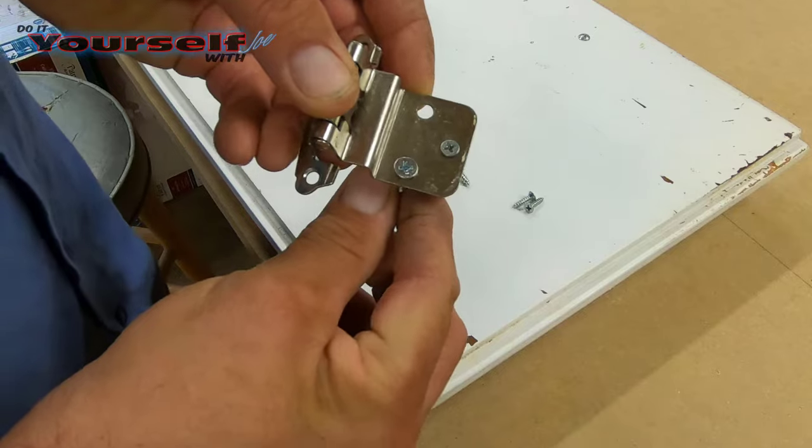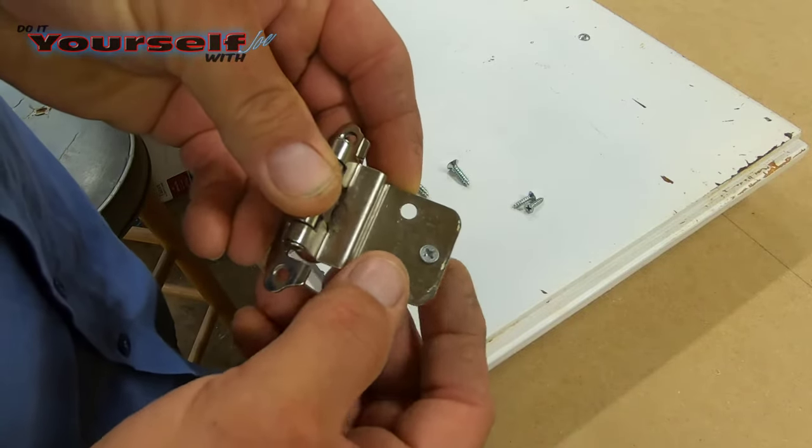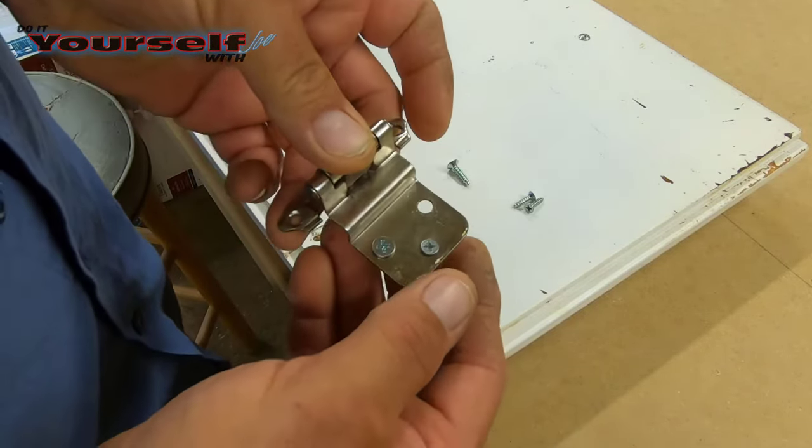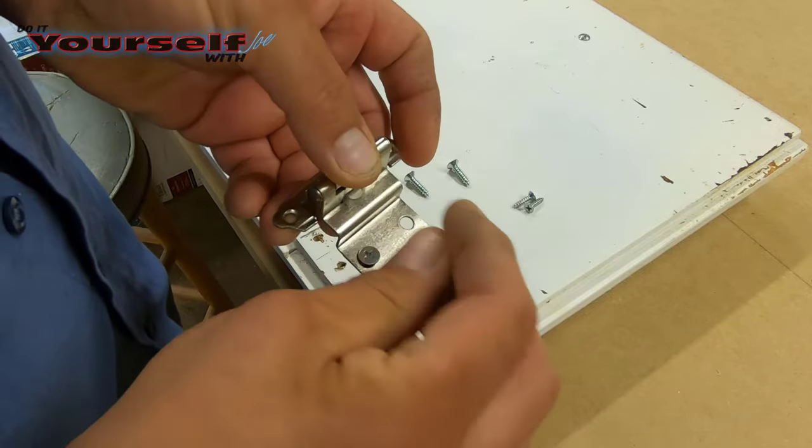First thing you can try is using a larger screw. Using a larger screw, the screw will look different from the rest and it may not sit flush on the hinge.